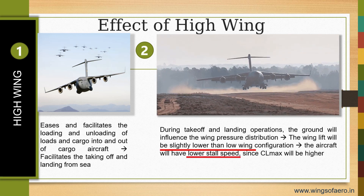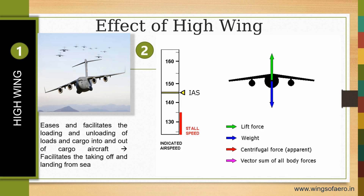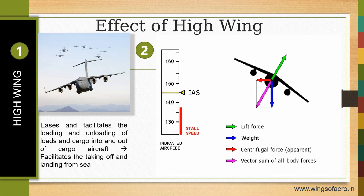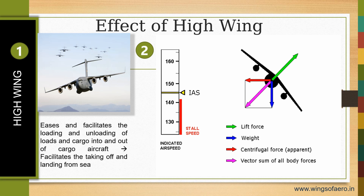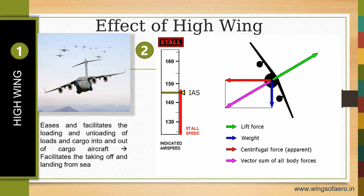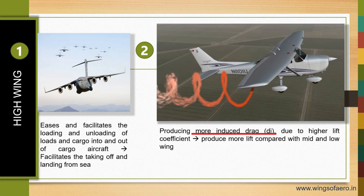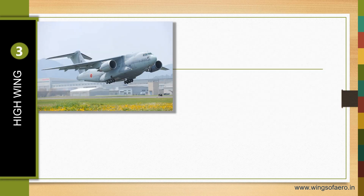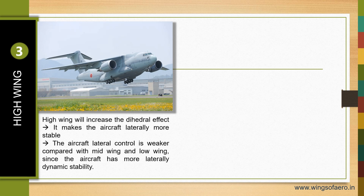The aircraft will have a low stall speed since the coefficient of lift will be high, as you can see in the figure. It produces more induced drag due to the high coefficient of lift, and produces more lift compared with mid and low wing configurations.